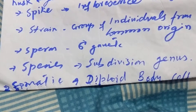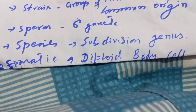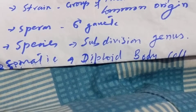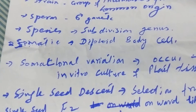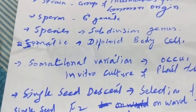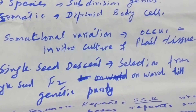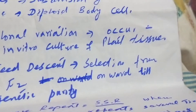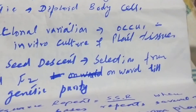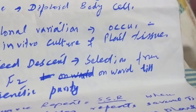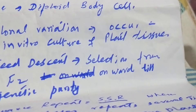Strain is a group of individuals from a common origin. Sperm is the male gamete. Species is a subdivision of genus.